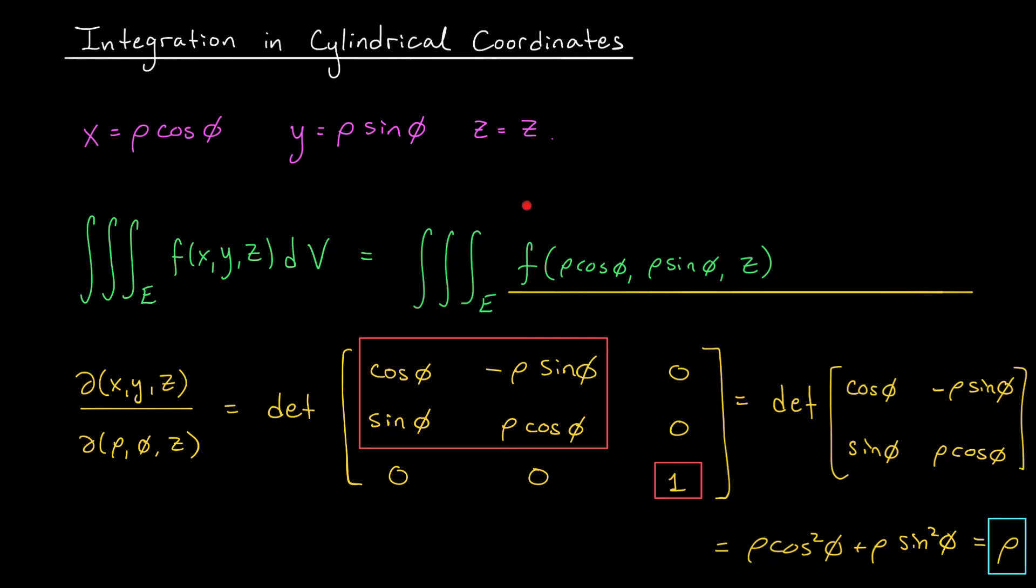So to wrap up this integral conversion, we add in our volume factor, rho dz drho dphi. Now you may be wondering about the order here, is it always dz drho dphi? Well, it doesn't have to be in this order, but in almost all practical applications, this is the order you're going to want.